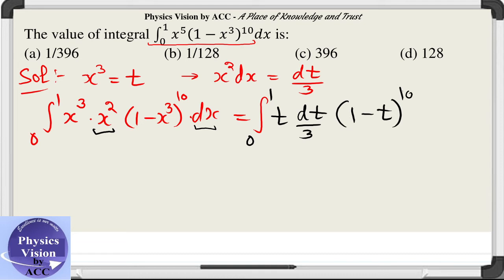This is t into 1 minus t power 10, and 1 by 3 is outside this integration.